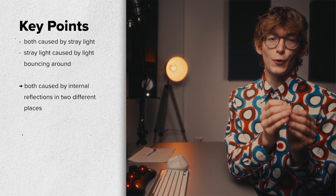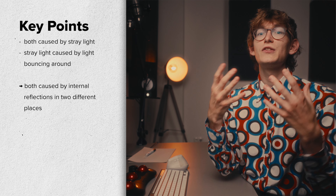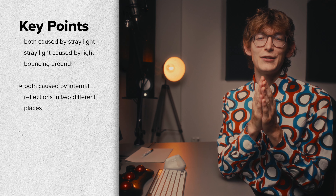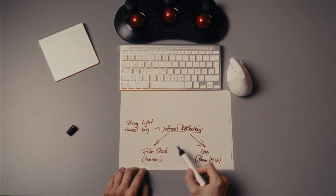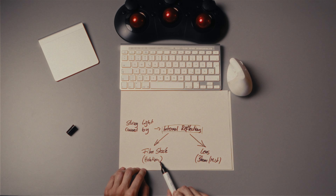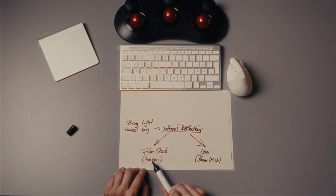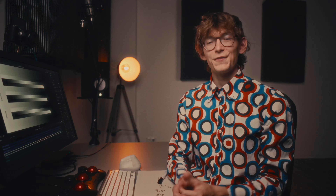Both share the same cause, which is internal reflections, but it's happening in two different places. One internal reflection is happening inside the film stock and one inside the lens, which is causing halation and bloom (or mist) respectively. This is why digital cameras don't create halation, and why diffusion filters can achieve bloom but not halation.